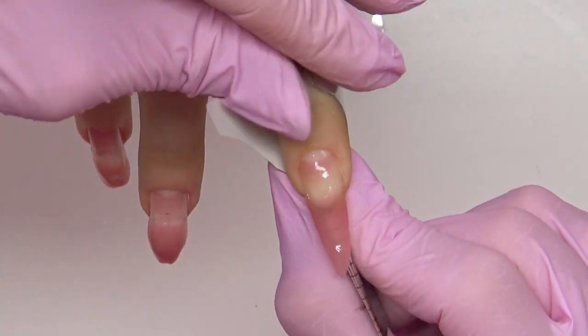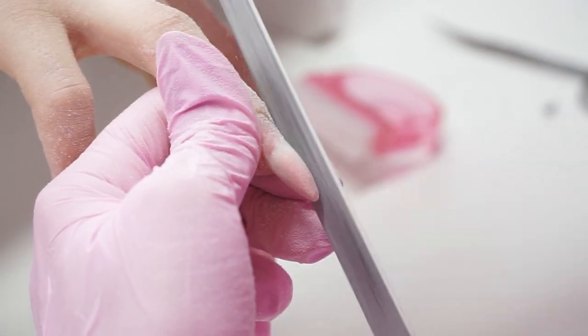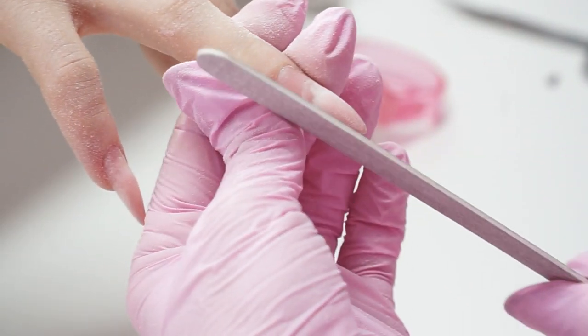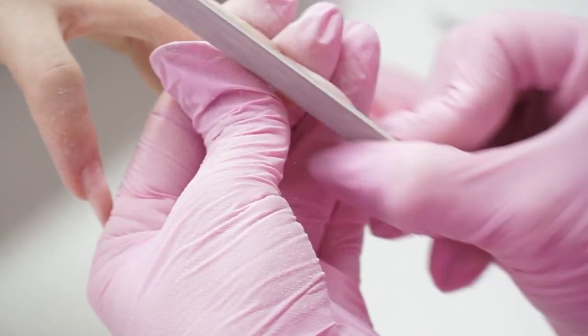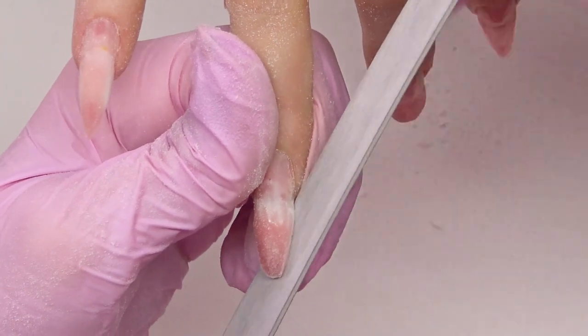Remove the forms and start filing. First, we file the sides looking from the top. And only then I take a look at what's inside, placing the file under the nail plate, making a straight line from the point of growth to the free edge.